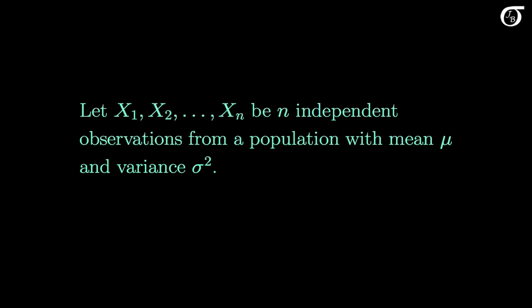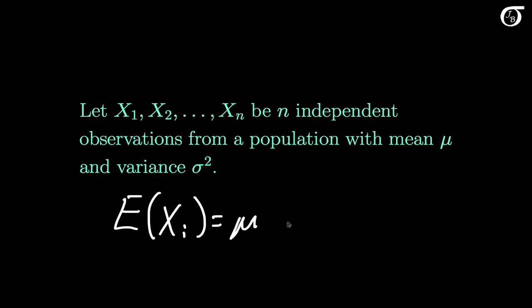Let x1 through xn be independent observations from a population with mean mu and variance sigma squared. The mean or expectation of each x is equal to mu, and the variance of each x is equal to sigma squared.